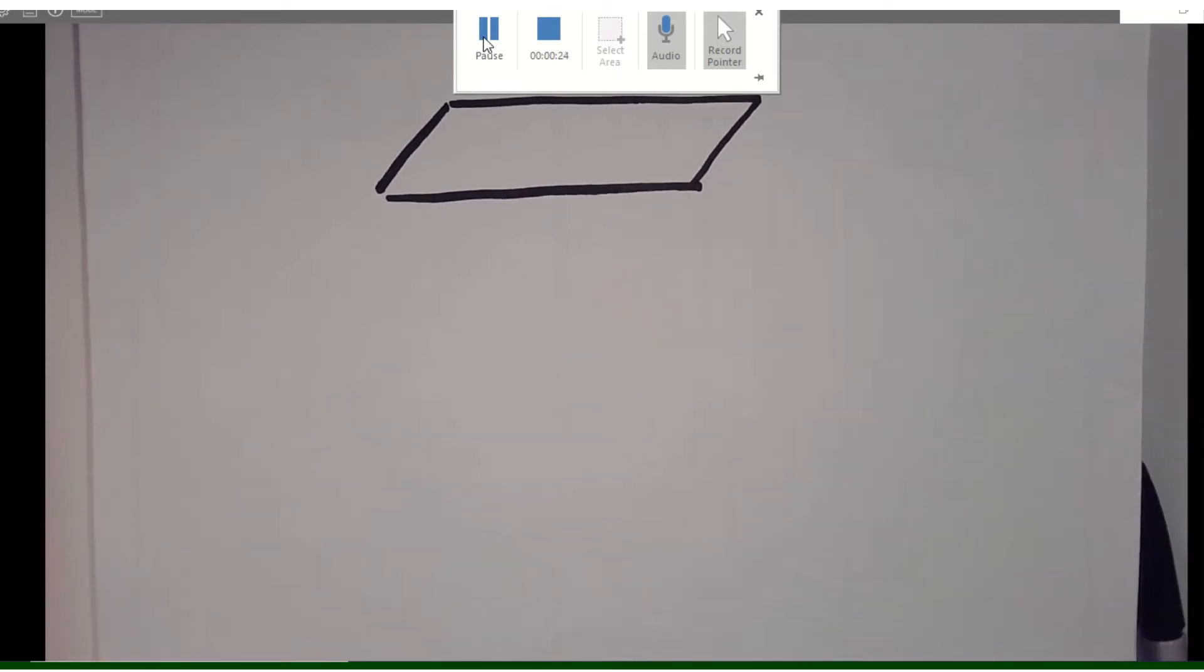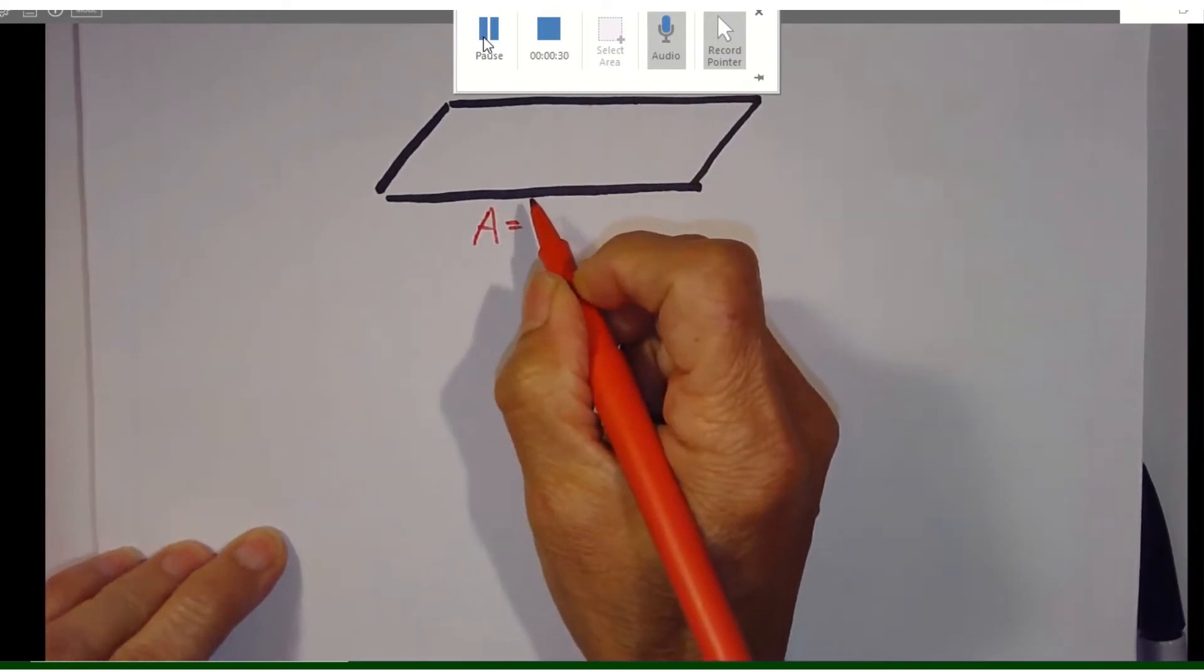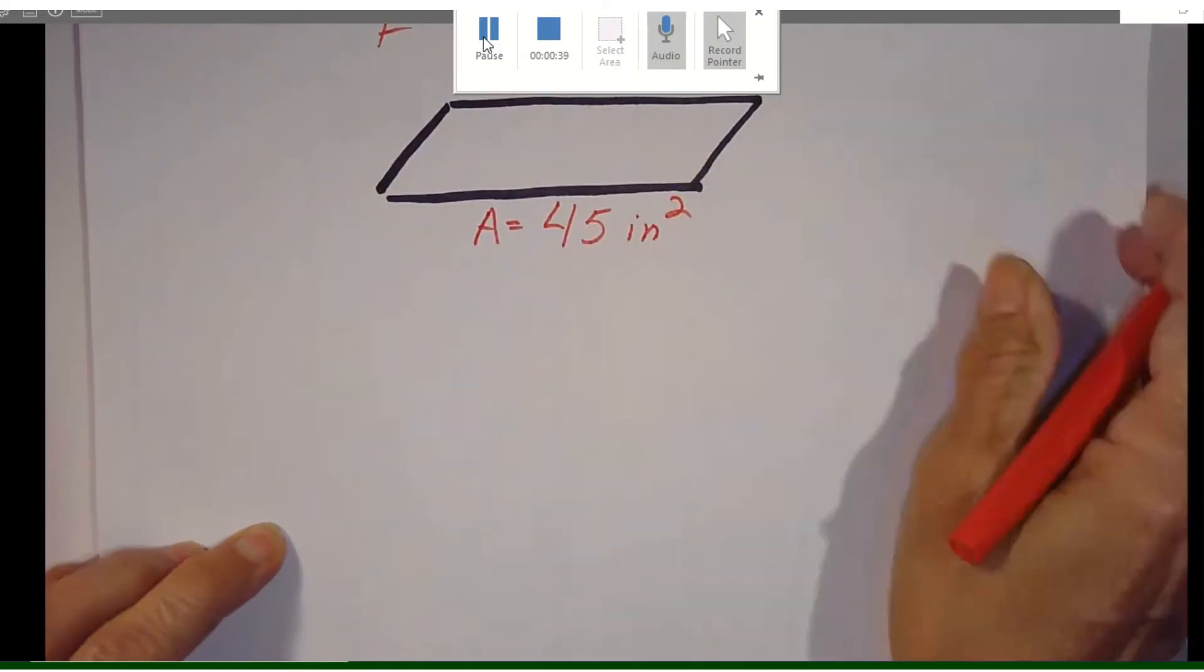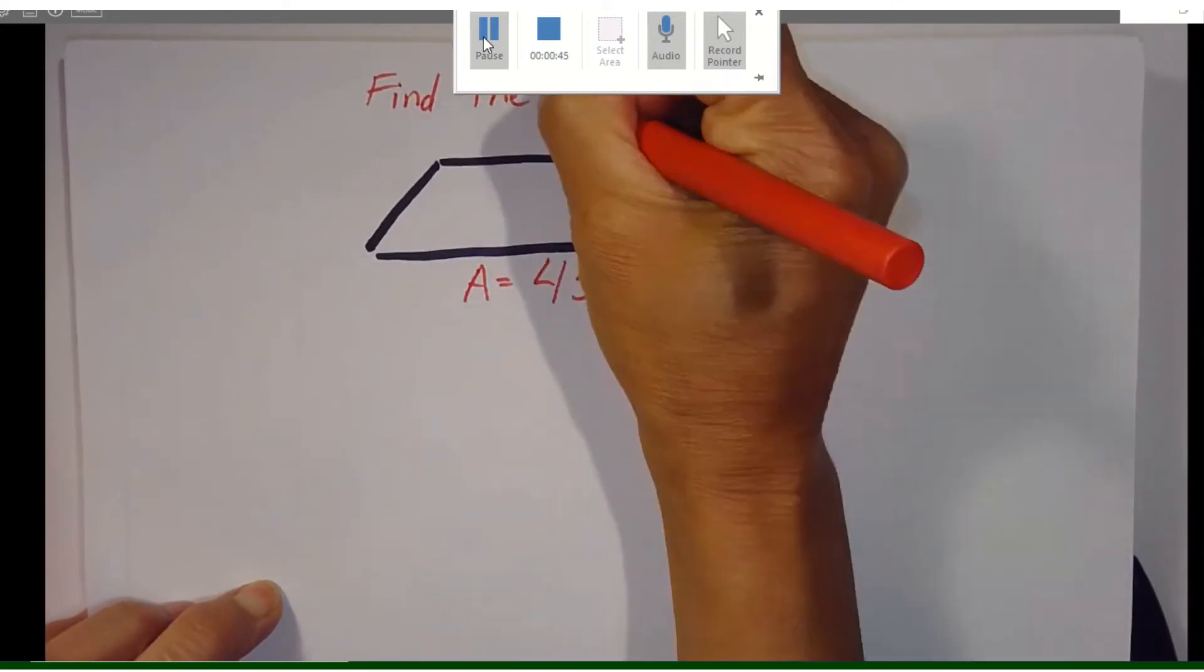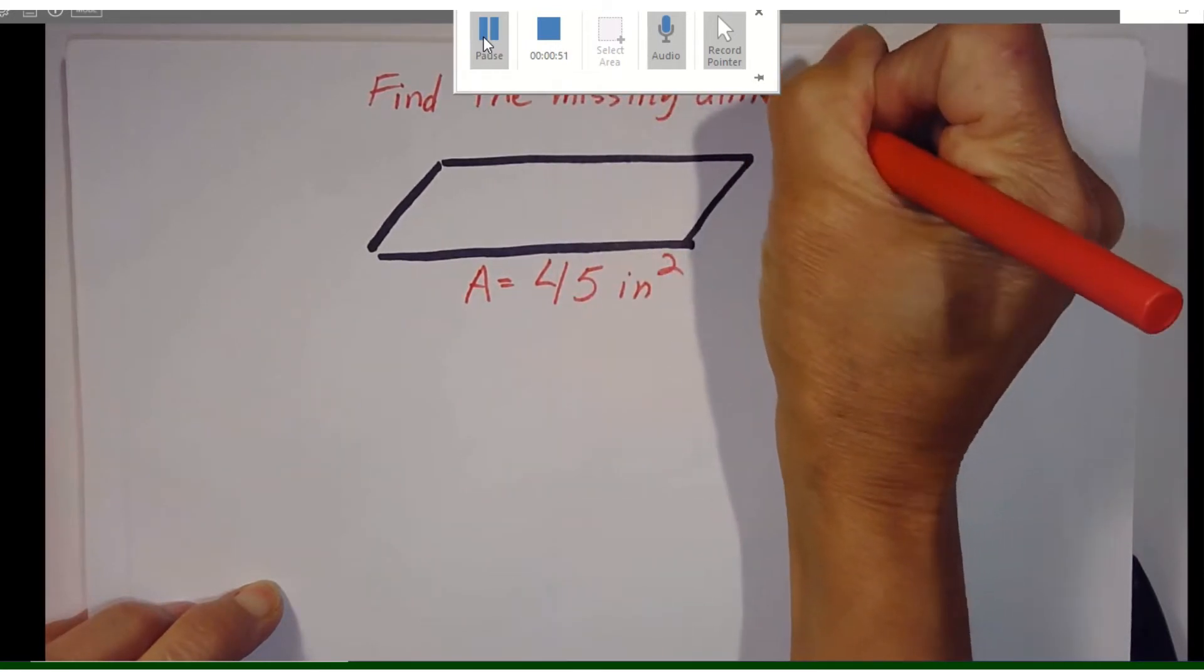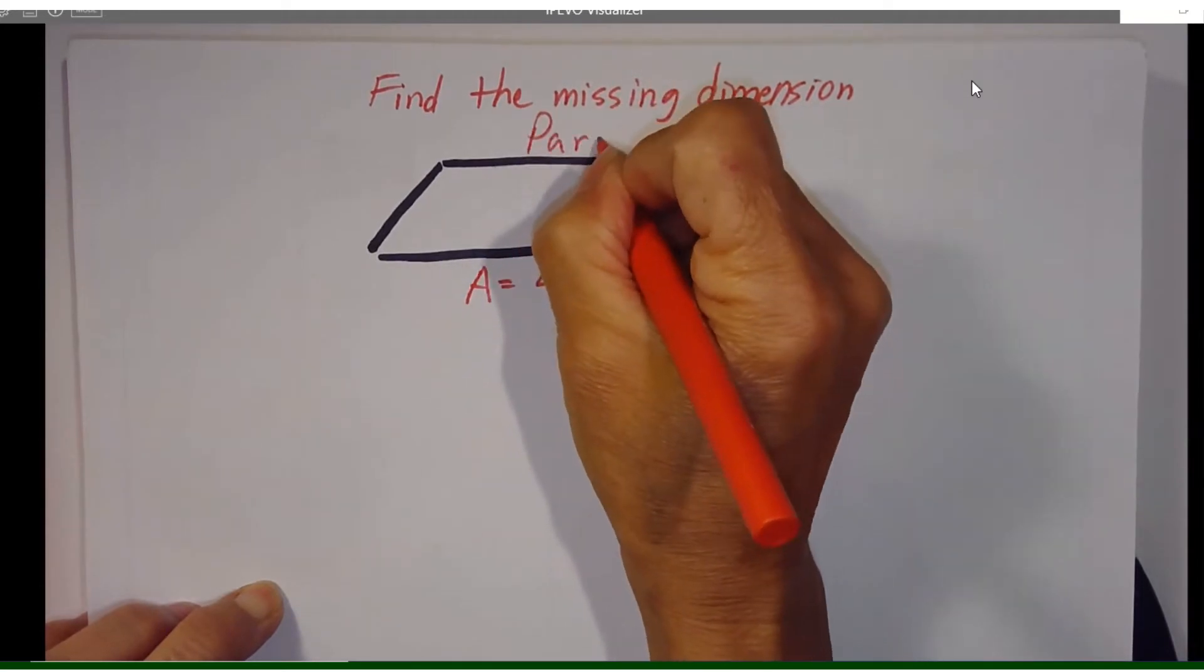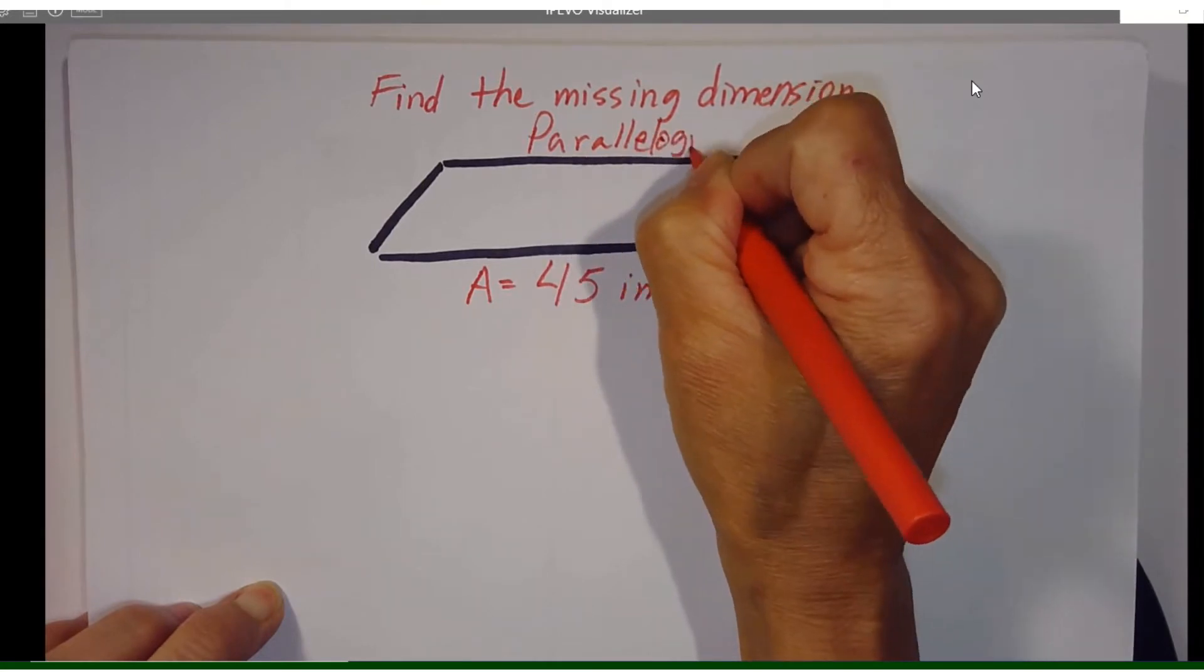I'm going to identify each of the areas. So in this case because we're looking for the missing dimension, we already know what the area is which is 45 inches squared. Again this is finding the missing dimension of a parallelogram.